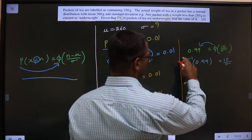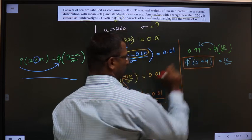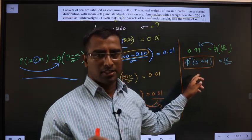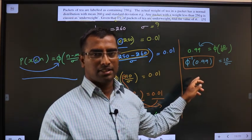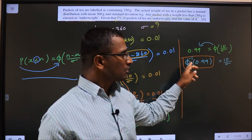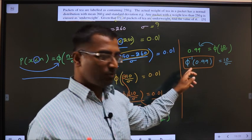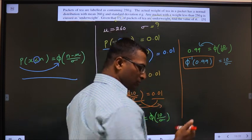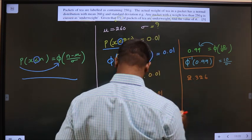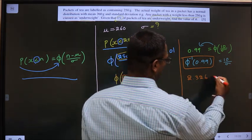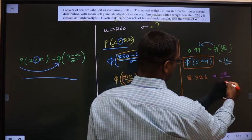This value you will get from normal distribution table. If any doubts in using that table, look at the playlist given in the description. So this value you should get it to be 2.326 equal to 10 by standard deviation.